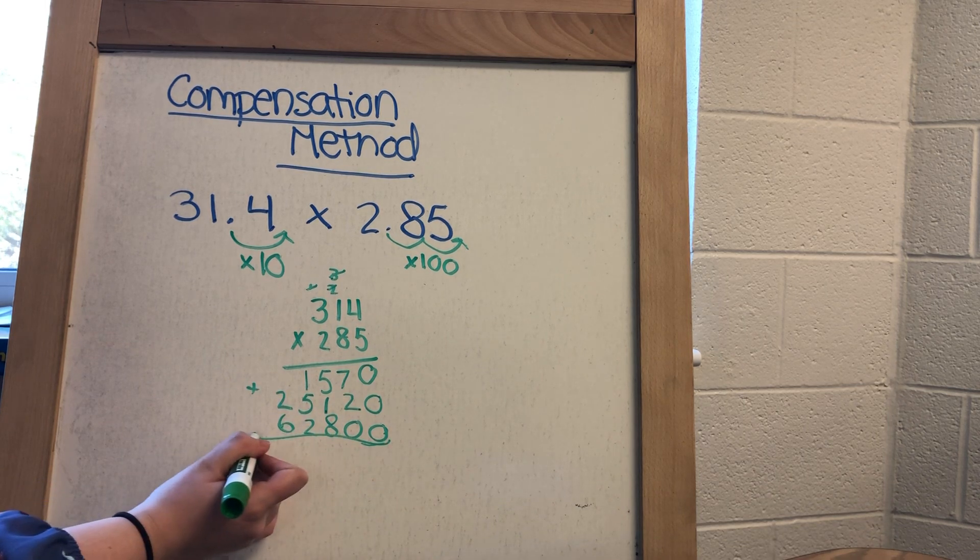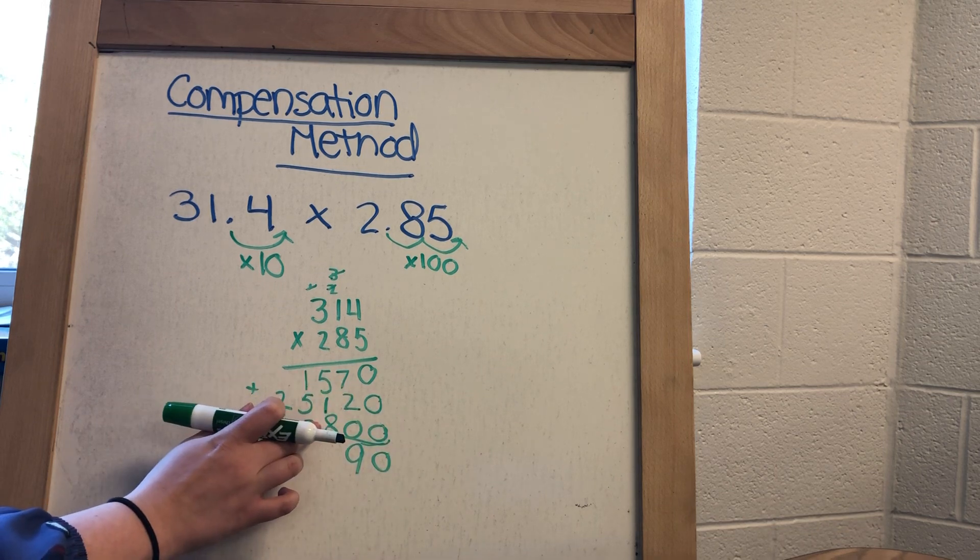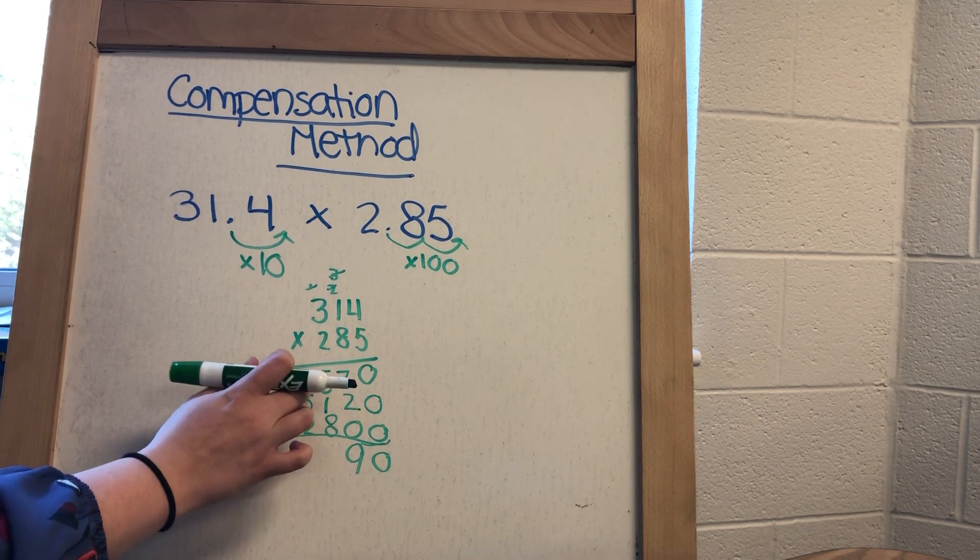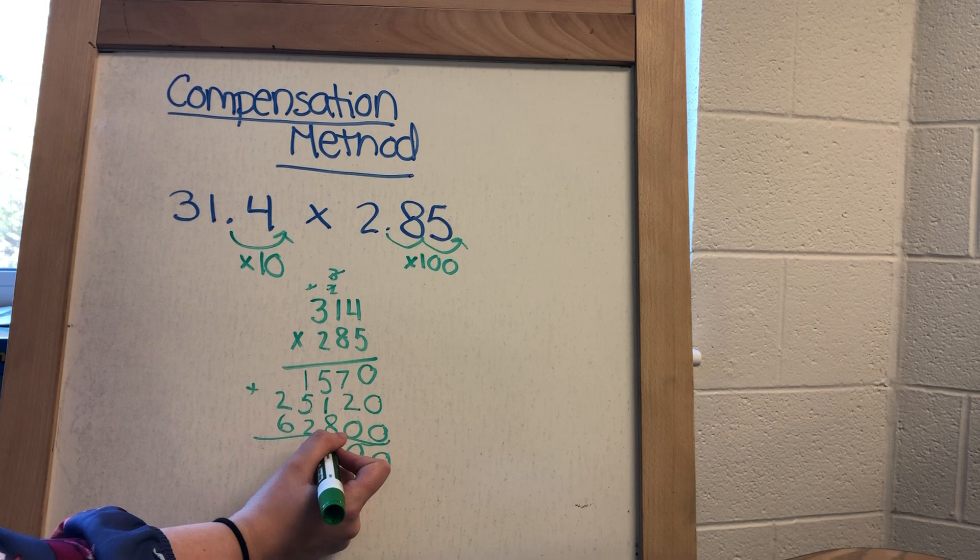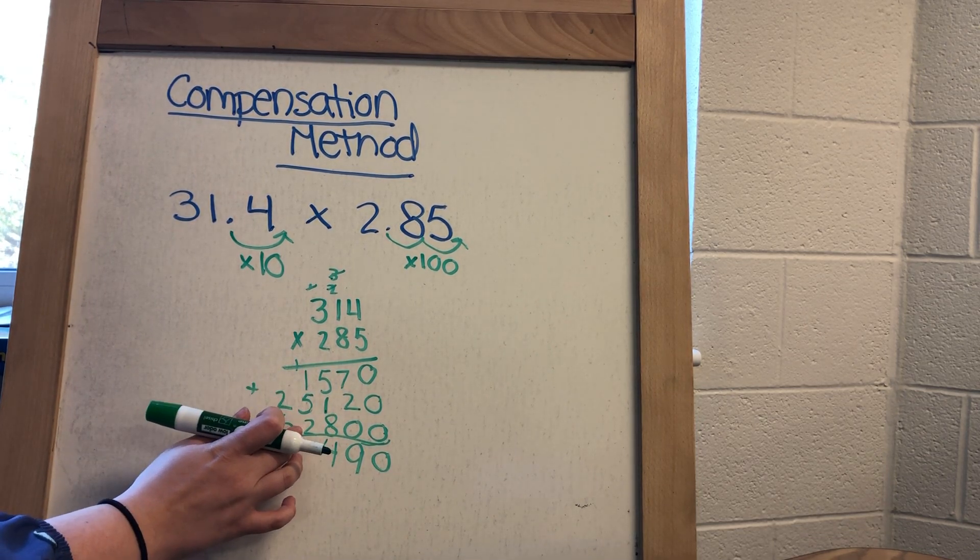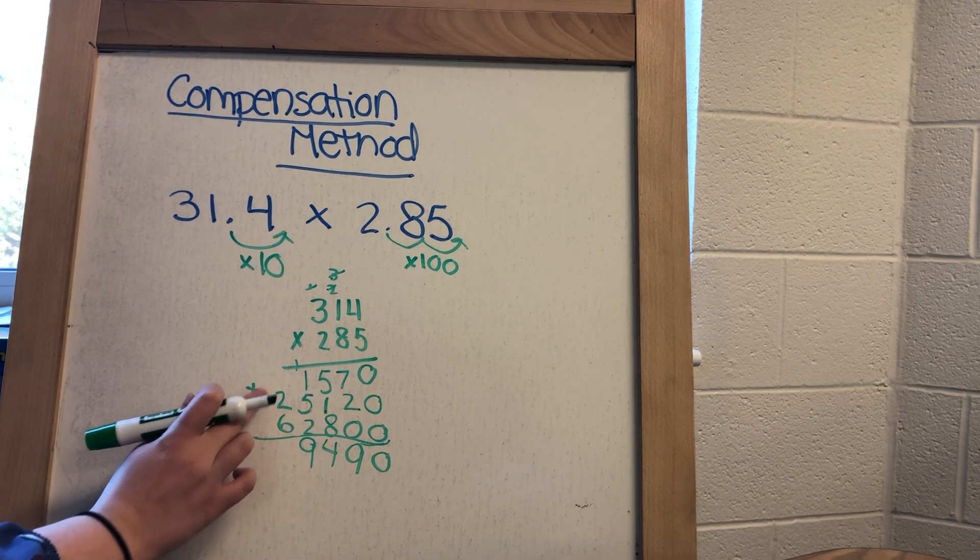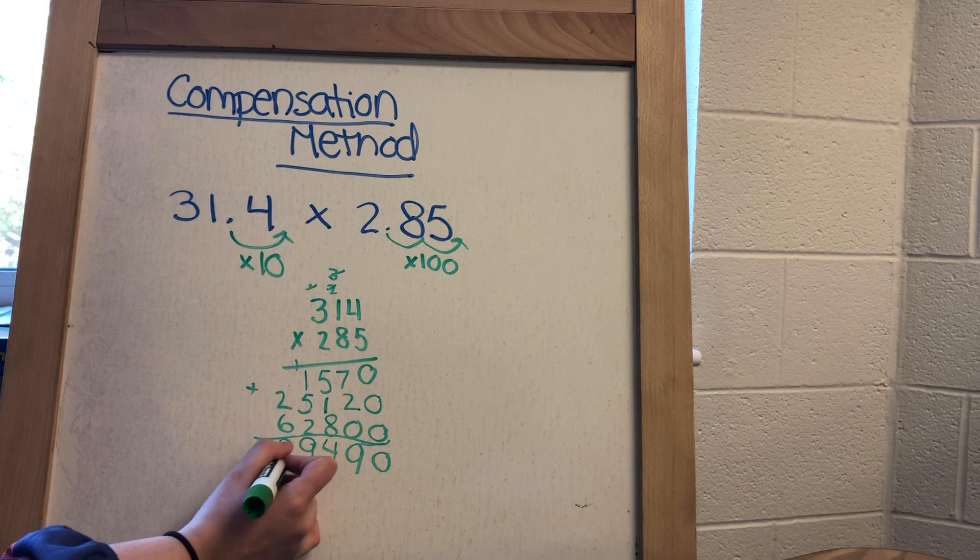I'm going to add 0, 9, 8 plus 1 is 9, plus 5 is going to be 14. Carry my 1. 5 plus 2 is 7, plus 1 is 8, plus 1 is 9. And then 2 plus 6 is going to be 8.